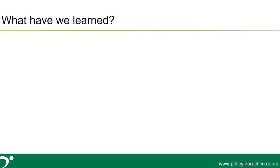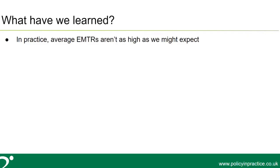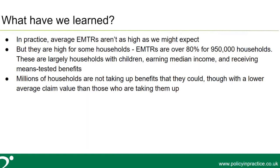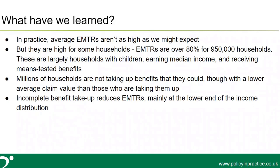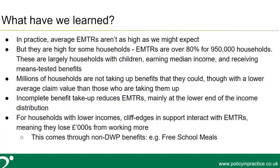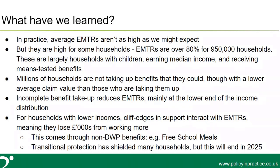In summary: in practice average EMTRs aren't as high as we might expect, but they are high for some households — I estimate about 950,000 households have EMTRs over 80% for at least one earner, largely households with children earning median income or less and receiving means-tested benefits. Millions of households are not taking up benefits they could claim, though they have lower average potential claims than those who are claiming. For households with lower incomes, cliff edges in support interact with EMTRs to mean they lose thousands of pounds of benefits from working more — primarily through free school meals and other passported benefits. This isn't currently an issue due to transitional protection, but it will be when that protection ends in 2025.